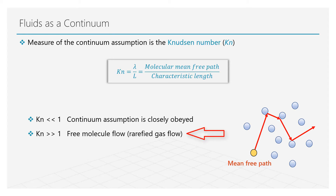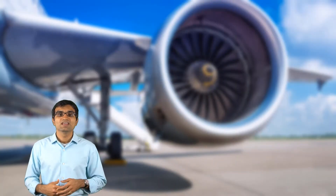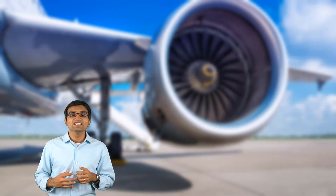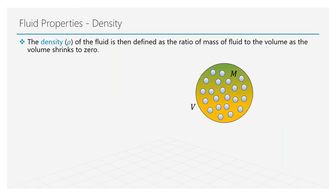The Knudsen number is large for rarefied gas flows, in which cases the fluid continuum assumption is not valid. The assumption of fluid continuum is the primary basis for deriving the governing equations of fluid motion. The mass of the fluid in a given volume is governed by the number of molecules and the molecular weight of the fluid. The density of the fluid is the ratio of the fluid mass to its volume as the volume shrinks to a small number.